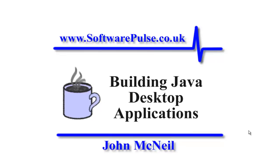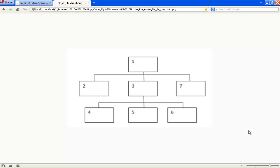In a previous tutorial we demonstrated how you could traverse the file system using a recursive call. Let me take you back to talk about what we previously did so we can appreciate the differences. When we did the recursive call, we started with a directory — labelled one here — and went into that directory and processed the information in it. Then we went down to the next directory and processed everything there.